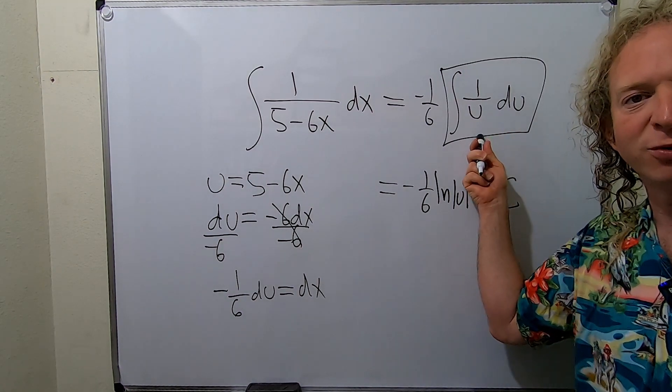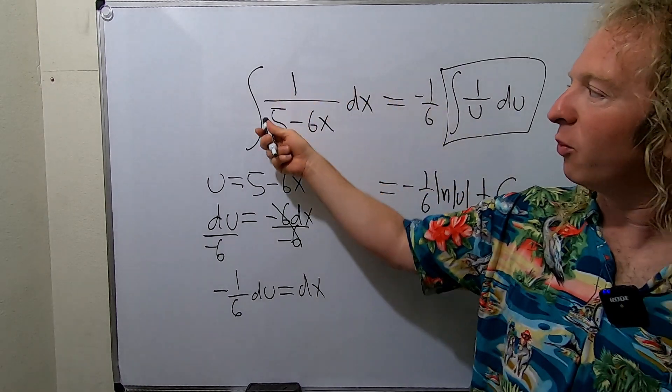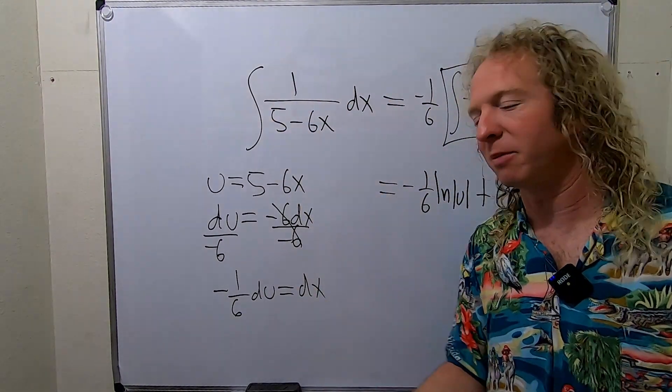So this is always equal to ln absolute value u plus c. That's why when I initially saw the question I thought, oh let's let u be the bottom piece.